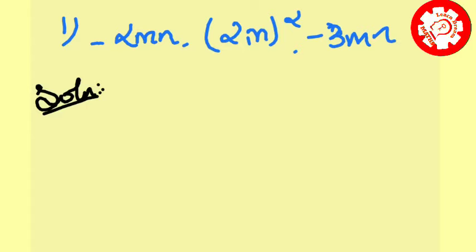The question is minus 2mn, 2m whole square, minus 3mn. So now we find it. Solution: to do product just multiply the numbers.